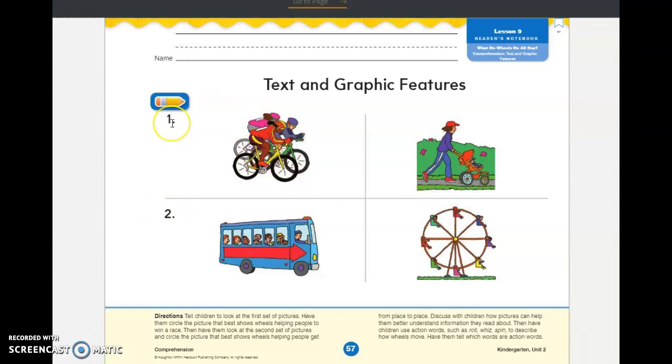Circle the pictures that best show wheels helping people to win a race. So you're going to put your finger on number one. You've got this picture right here. You've got this picture right here, see with the kids on the bike. You've got the mom pushing the stroller. Circle the picture that best shows someone trying to win a race. Where are people using wheels to win a race?